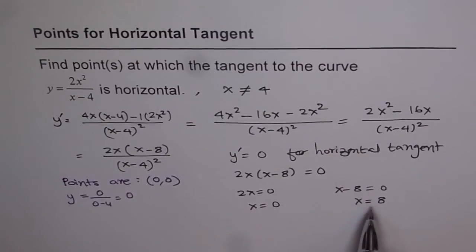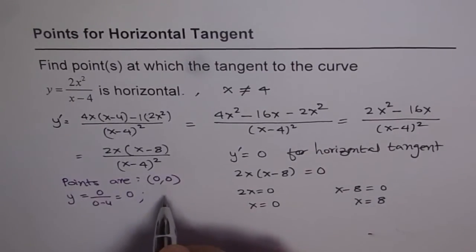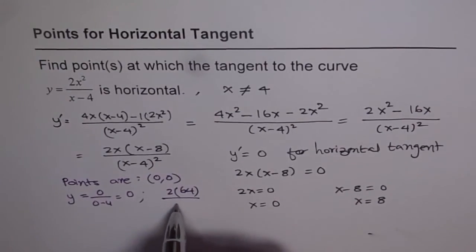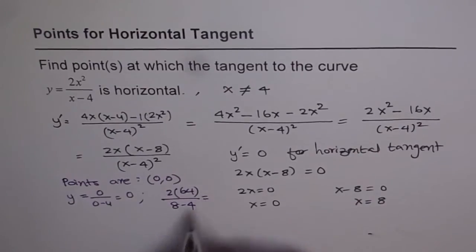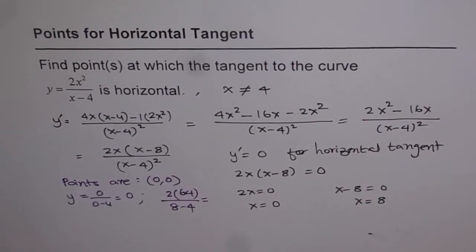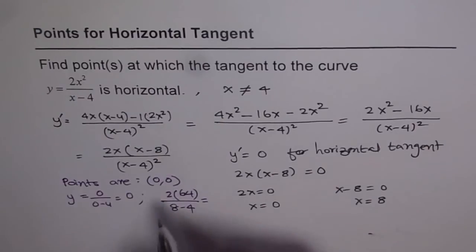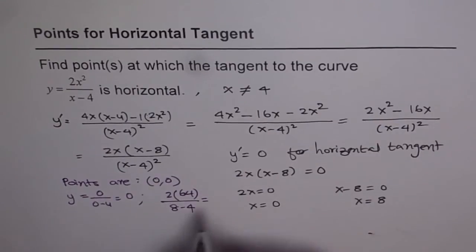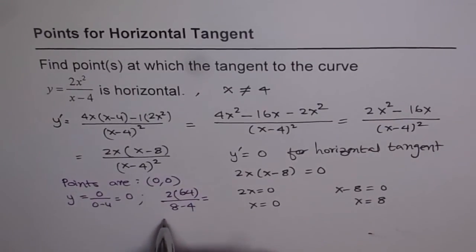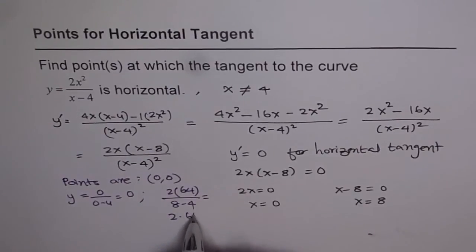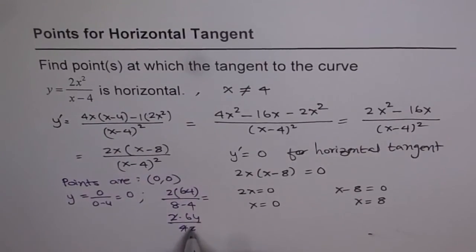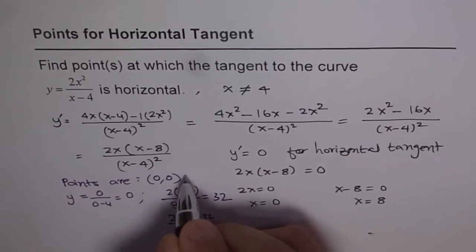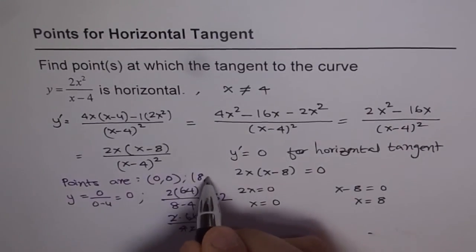Now, the second point will be, plug in 8. So we get 2 times 8 squared is 64 over 8 minus 4. Calculate this out. So 8 minus 4 is 4. So divide 64 by 4. So let's simplify it here. 2 times 64 over 4. So that goes 2 times and this gives you 32. So we have 32 as our answer. So the second point for us is, at 8, we have 32.